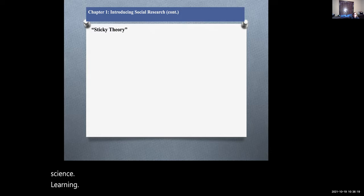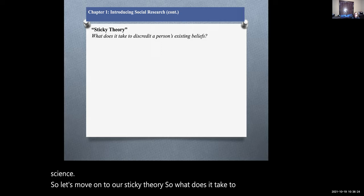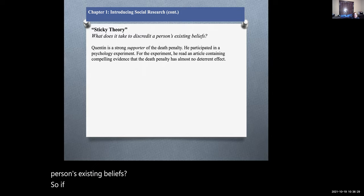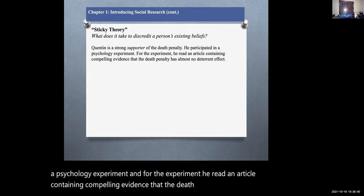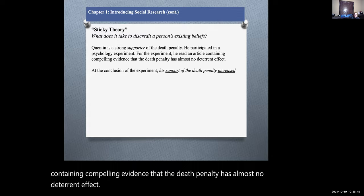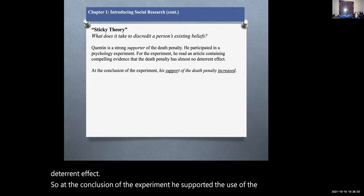Let's move on to our sticky theory. What does it take to discredit a person's existing beliefs? If Quinton is a strong supporter of the death penalty, he participated in a psychology experiment and for the experiment he read an article containing compelling evidence that the death penalty has almost no deterrent effect. At the conclusion of the experiment, he supported the use of the death penalty to be increased.